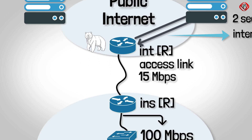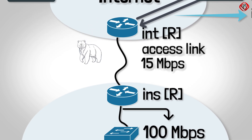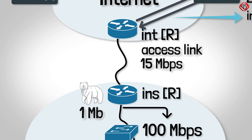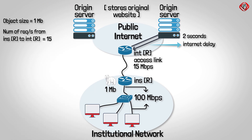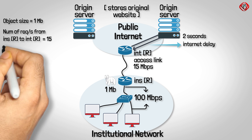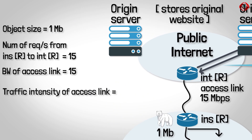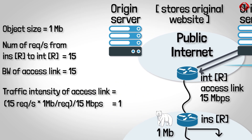The internet router then sends these objects to the institution router over the 15 Mbps access link. Assuming the average object size is 1 Mbps and there are 15 requests per second from the institution to the origin servers, the bandwidth of the access link is 15 Mbps. Therefore, the traffic intensity on the access link is 1, meaning the access link is operating at 100% of its capacity, which causes high delays.